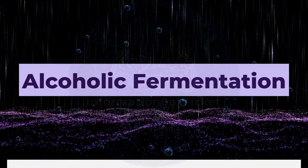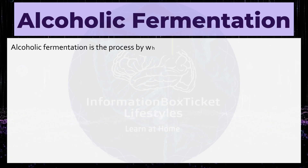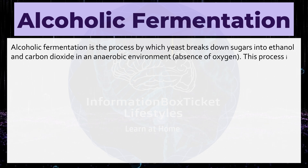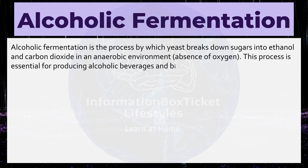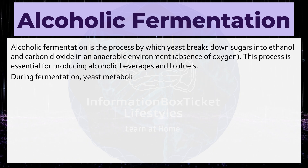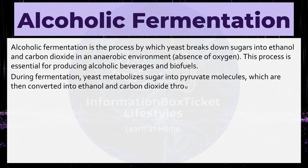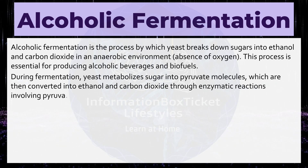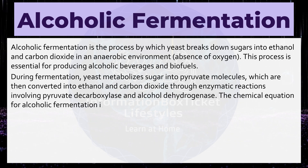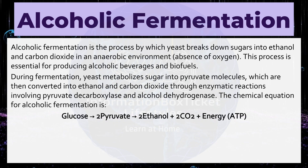Alcoholic fermentation is the process by which yeast breaks down sugars into ethanol and carbon dioxide in an anaerobic environment, absence of oxygen. This process is essential for producing alcoholic beverages and biofuels. During fermentation, yeast metabolizes sugar into pyruvate molecules, which are then converted into ethanol and carbon dioxide through enzymatic reactions involving pyruvate decarboxylase and alcohol dehydrogenase. The chemical equation for alcoholic fermentation is: glucose → 2 pyruvate → 2 ethanol + 2 CO₂ + energy (ATP).